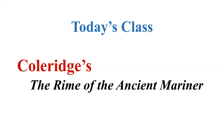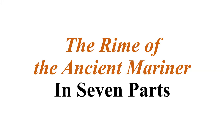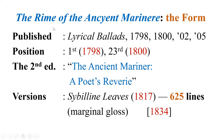Today's class is Coleridge's The Rime of the Ancient Mariner. The original spelling is 'Rime' R-I-M-E, 'Ancient' A-N-C-Y-E-N-T, 'Mariner' M-A-R-I-N-E-R-E. It was published for the first time in Lyrical Ballads, first edition 1798, and this is the opening poem of that 1798 edition.